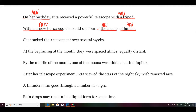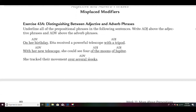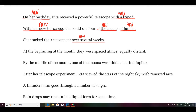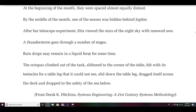She tracked their movement over several weeks. The prepositional phrase is over several weeks. It's modifying tracked — she tracked her movement when? Over several weeks — so that would be adverbial, because it tells when she tracked it. It would be easier if I had those questions written right in front of me — what an adjective answers and what an adverb answers. If you have those in front of you, you should be able to identify them.